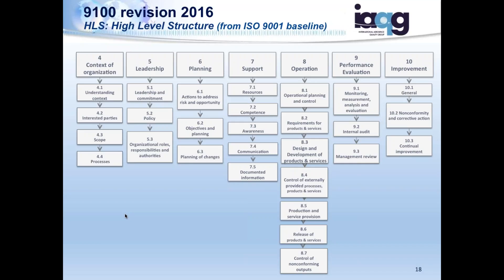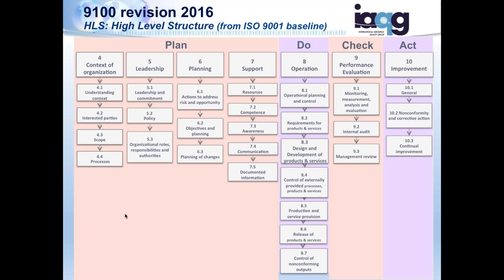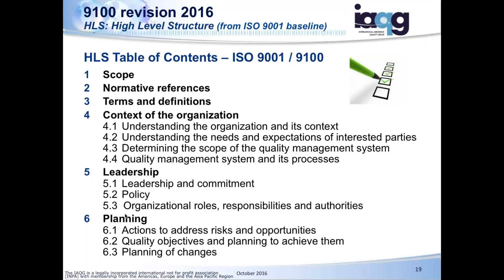Here is the structure in more detail. Scope, references, terms and definitions. Then 'context of the organization' — understanding the organization's context, culture, competitors, customers, needs and expectations of interested parties, scope of the quality management system, and QMS processes. ISO has removed the requirement for a quality manual; however, 9100 retains a requirement for a high-level document that defines many of these aspects within the Section 4 panel, similar to what we have today.